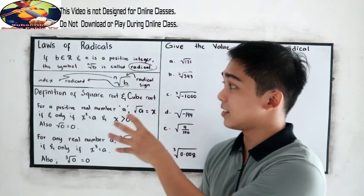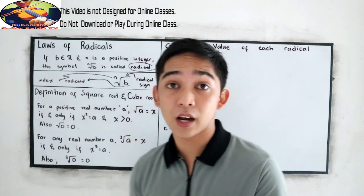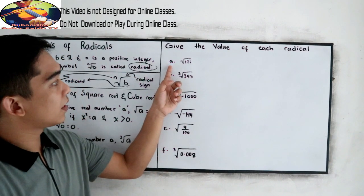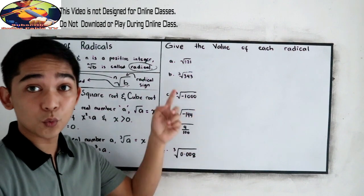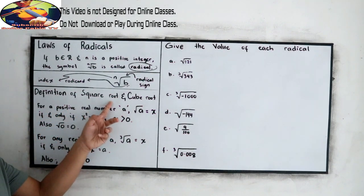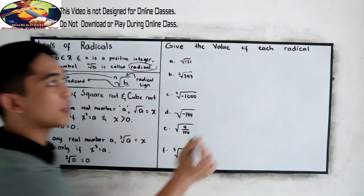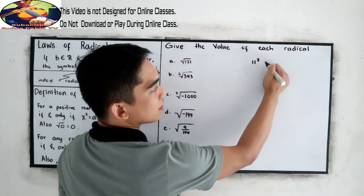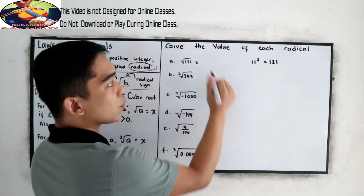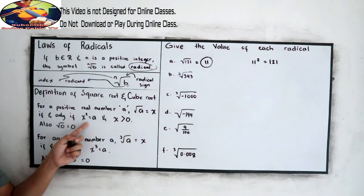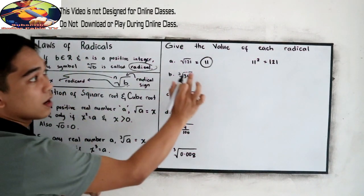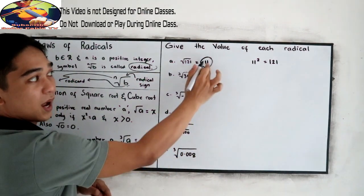To better understand these definitions, let's have the following examples — give the value of each radical. For A, square root of 121: following our definition of square root, 121 can be written as 11 squared, which gives us 121. That means the square root of 121 is 11. Here, X squared is equal to A where A is 121, so our value is 11.